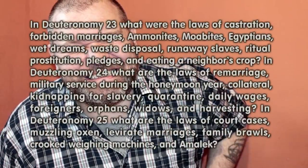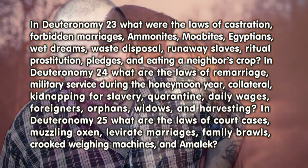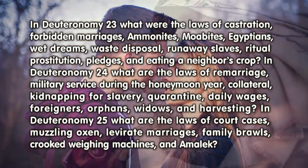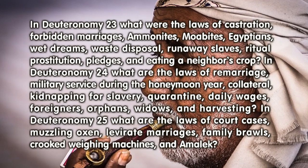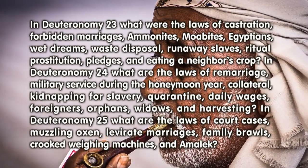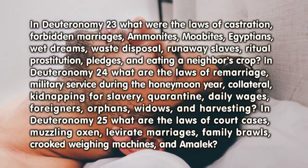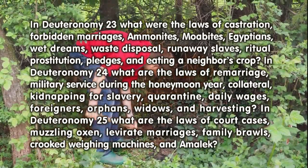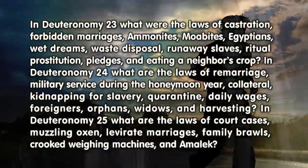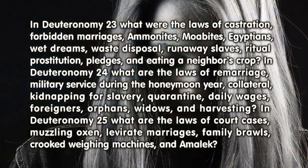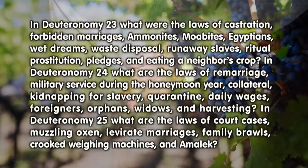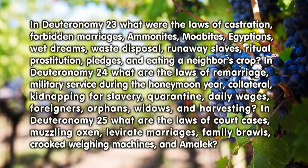In Deuteronomy 23, what were the laws of castration, forbidden marriages, Ammonites, Moabites, Egyptians, wet dreams, waste disposal, runaway slaves, ritual prostitution, pledges, and eating a neighbor's crop?